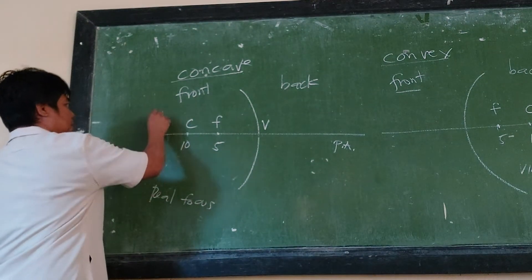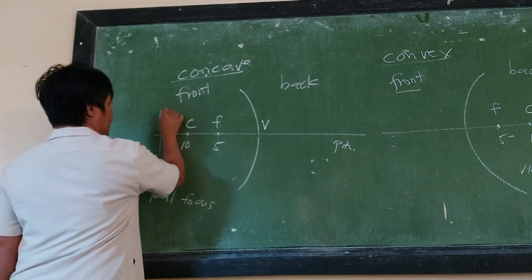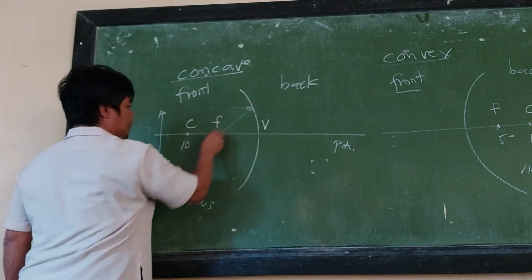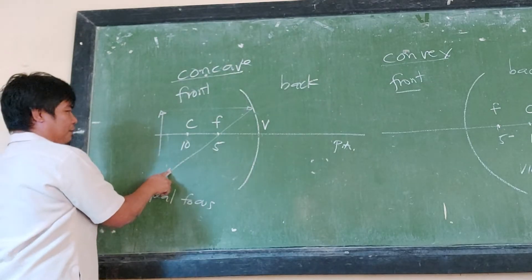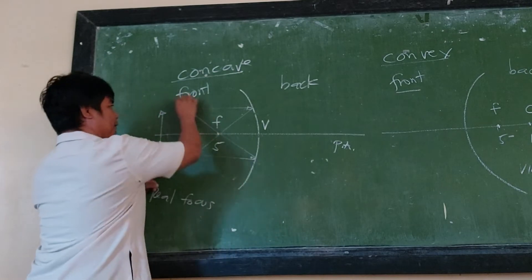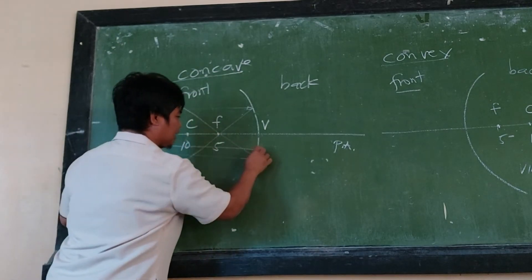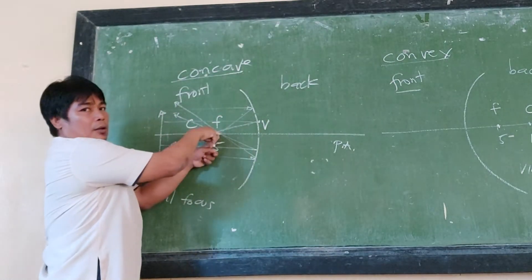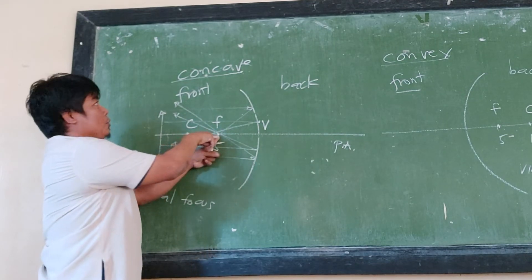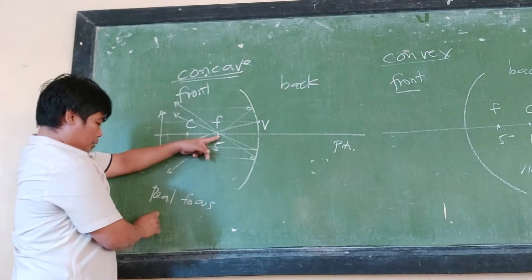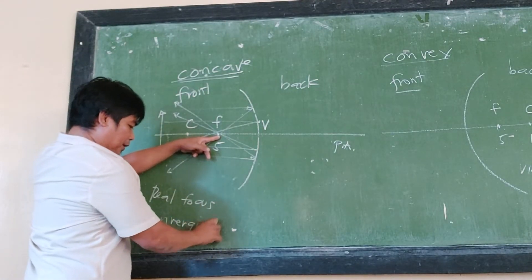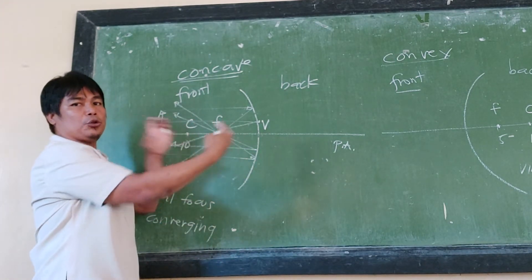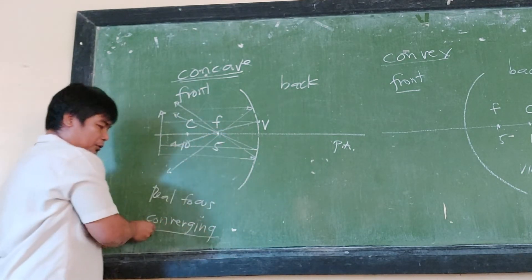Let's say here is the object, and we have a ray of light from the head of this object. It will be reflected to the focus — this is the reflected ray. Let's draw another ray: it is going to the focus as well. As you can see, they are all passing through the focus. So we call this concave mirror a converging mirror, because all the rays converge — they go to a common point, the focus.